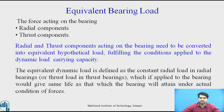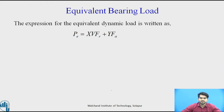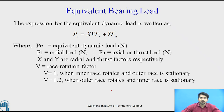The equivalent dynamic load is defined as the constant radial load in a radial bearing or the thrust load in a thrust bearing, which if applied to the bearing would give the same life as that which the bearing will attain under the actual conditions of the forces. The expression for finding the equivalent bearing load, indicated by P suffix E, is: PE = X·V·FR + Y·FA, where PE is the equivalent dynamic load in Newton, FR and FA are the radial and axial loads acting on the bearing, and X and Y are the radial and thrust factors respectively.